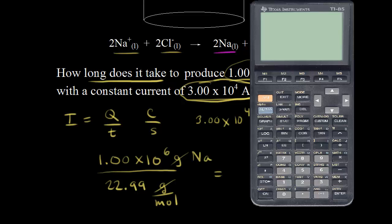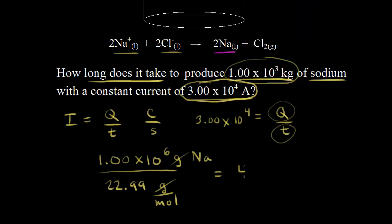Using the calculator: 1.00 × 10⁶ divided by 22.99 gives us 4.35 × 10⁴ moles of sodium.